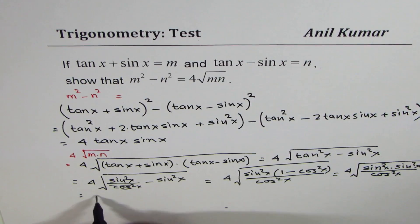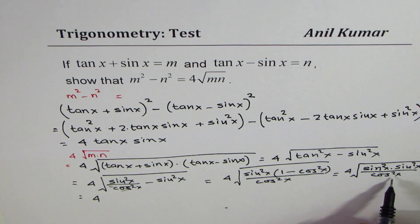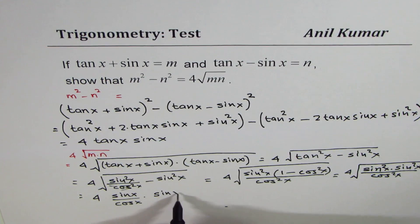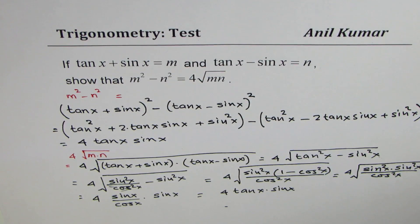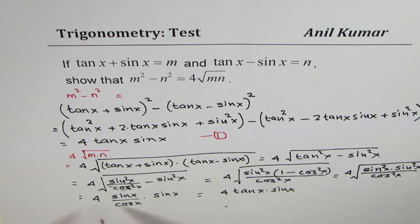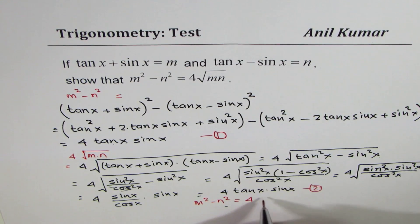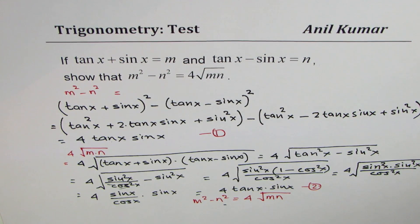Since all are square terms, we can open the bracket and write this as 4 times (sin x over cos x) times sin x. Since sin x over cos x is tan x, we get 4 tan x sin x. In part 1, we got m squared minus n squared as 4 tan x sin x, and in part 2 we got the same. Since both are equal, m squared minus n squared equals 4 times the square root of mn. I hope that is clear — thanks for watching and all the best.